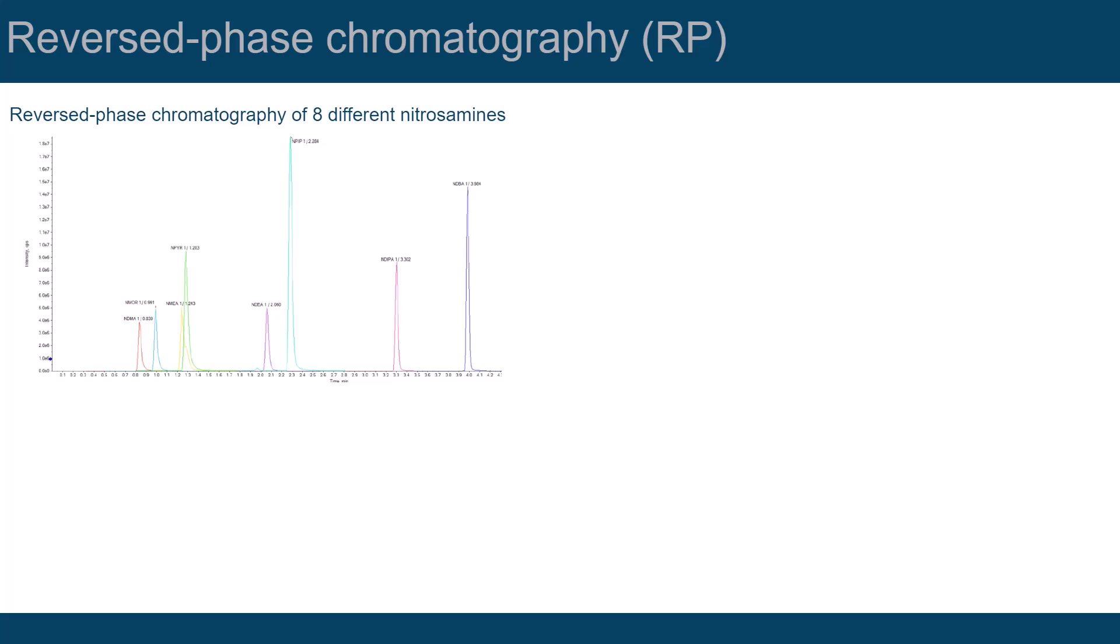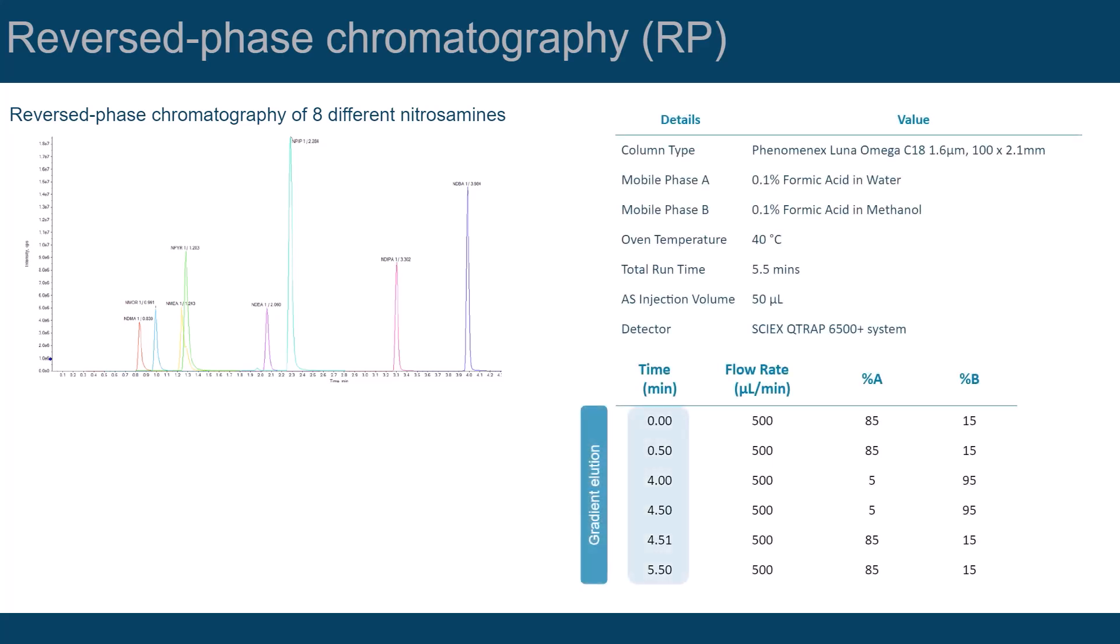This is the resulting chromatogram when this method was used. A gradient was applied in which the mobile phase was more aqueous in the beginning, and it contained more organic solvent towards the end.